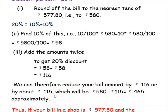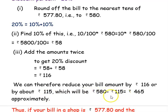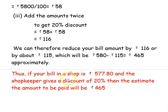Since we are estimating, we round rupees 116 off to rupees 115. So rupees 580 minus rupees 115 — subtracting the discount from the sale price — gives rupees 465.